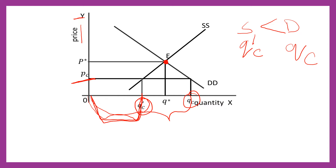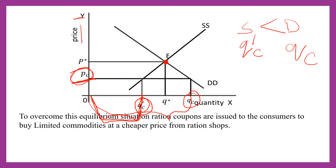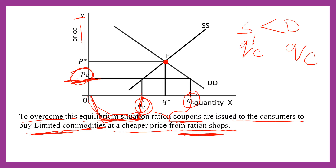In that situation, demand is more than the supply of essential goods because price is fixed lower than the equilibrium level. To overcome this situation, ration coupons are issued to consumers to buy limited commodities at a cheaper price from the ration shops. The price ceiling is fixed by the government, and consumers can buy limited commodities from ration shops at the price fixed by the government.